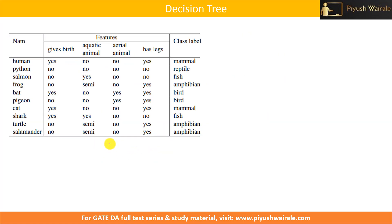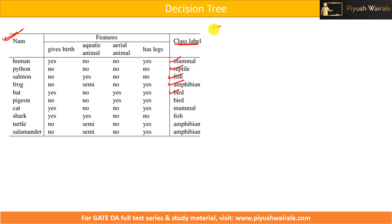Let's discuss an example. Consider a dataset with features: gives birth, aquatic animal, aerial animal, and has legs. Our class labels are: mammal, reptile, fish, amphibian, and bird — so we have five class labels. We need to find the Gini Index for this dataset based on these class labels.